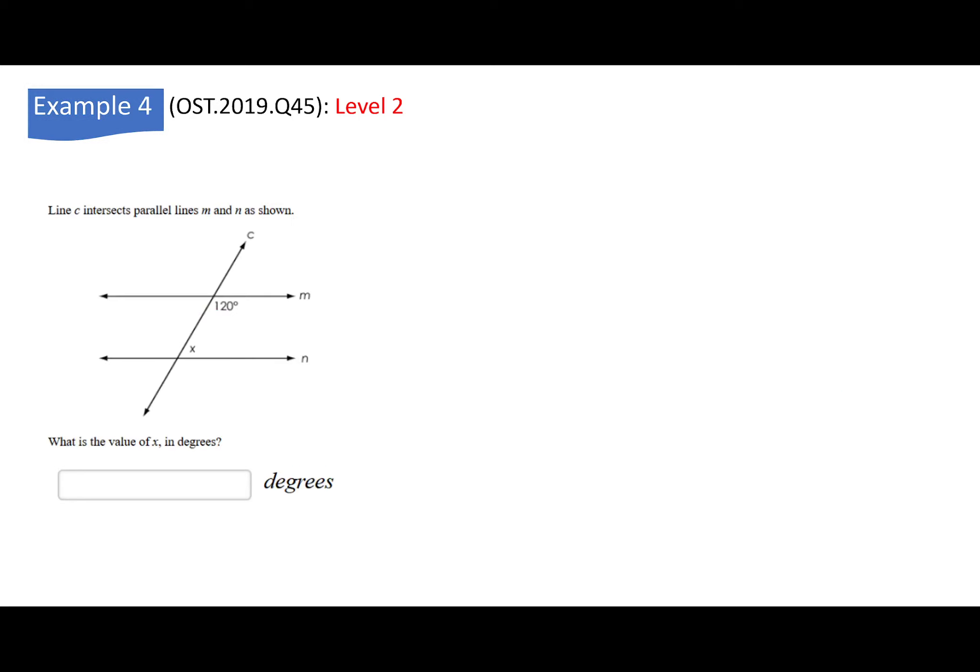Example 4. This is very easy. Line C intersects parallel lines M and N, as shown. What is the value of x? Remember the 180 rules I mentioned earlier. These two add up to 180. One is acute, one is obtuse. So 180 minus 120 is 60.